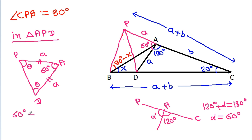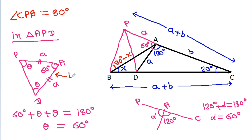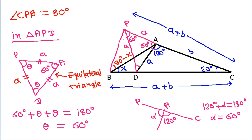So 60 degrees plus theta plus theta equals 180 degrees, which means theta equals 60 degrees. Therefore triangle APD is an equilateral triangle, so PD is also equal to A. This angle is 60 degrees, and we have angle CPB is 80 degrees.